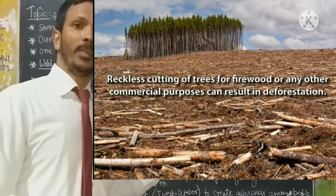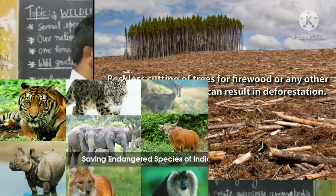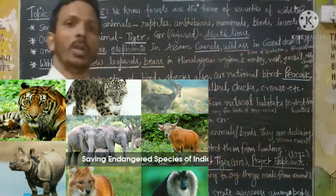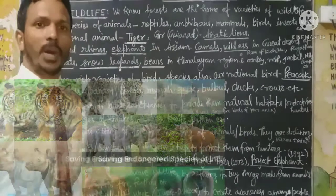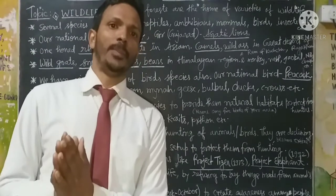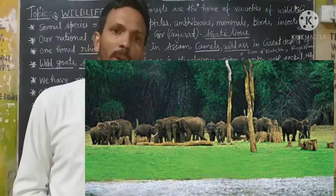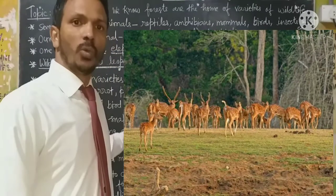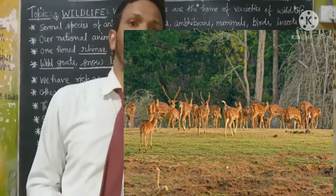Many wildlife species will become either endangered or extinct. To protect wildlife animals and birds, our government has set up many wildlife sanctuaries, many national parks, biosphere reserves, to protect such wildlife species from hunting or illegal poaching.